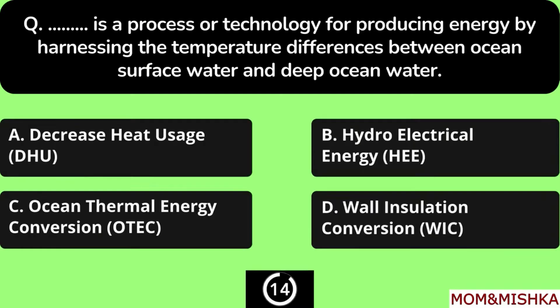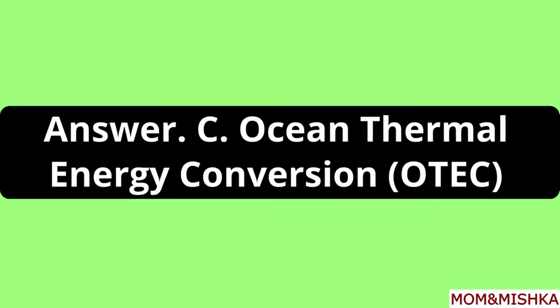Blank is a process or technology for producing energy by harnessing the temperature differences between ocean surface water and deep ocean water. Option C: Ocean Thermal Energy Conversion.